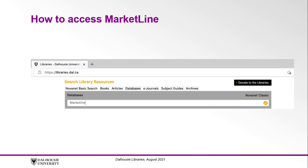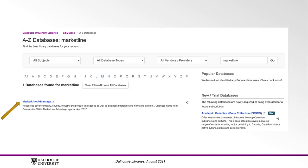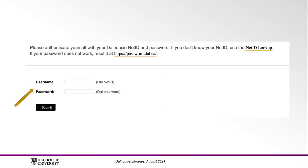The best way to access MarketLine is to begin at libraries.dal.ca. Using the search bar, select database and type in MarketLine. Then click the magnifying glass icon to search. Click on MarketLine Advantage and sign in using your NetID and password.